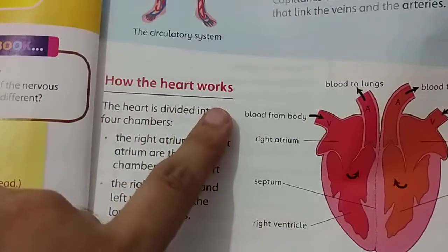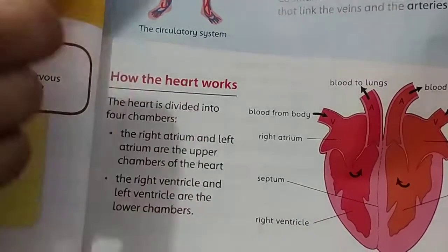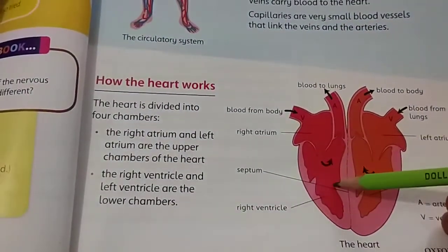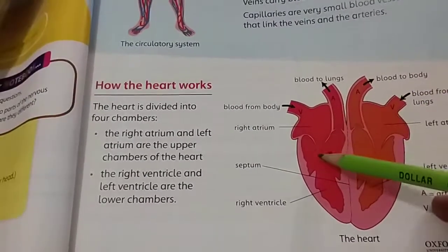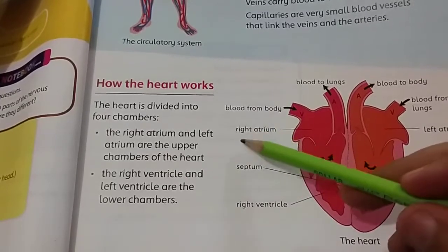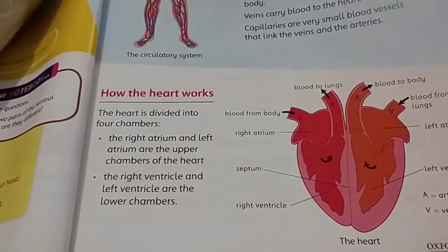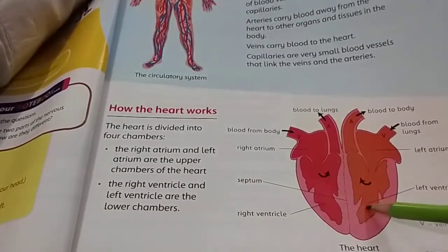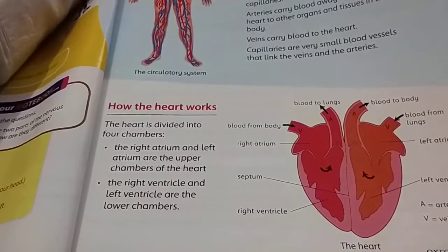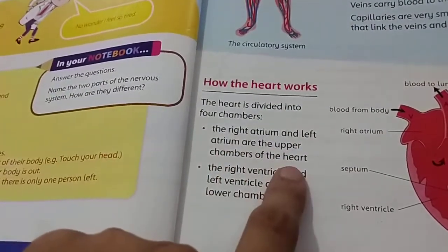How does the heart work? The heart is divided into four chambers — four rooms. The upper rooms are called the atrium. On the right we have the right atrium and on the left we have the left atrium. The lower rooms are known as ventricles: the right ventricle and the left ventricle.